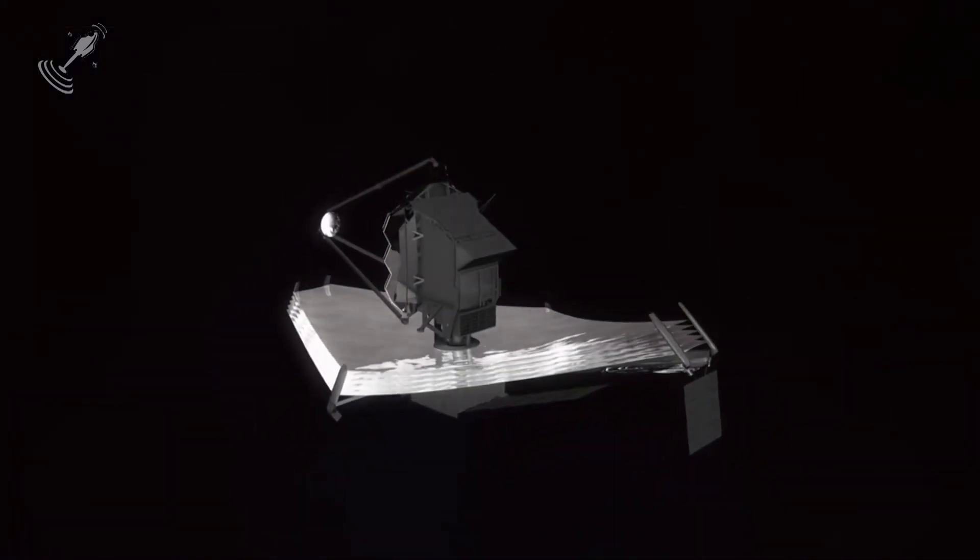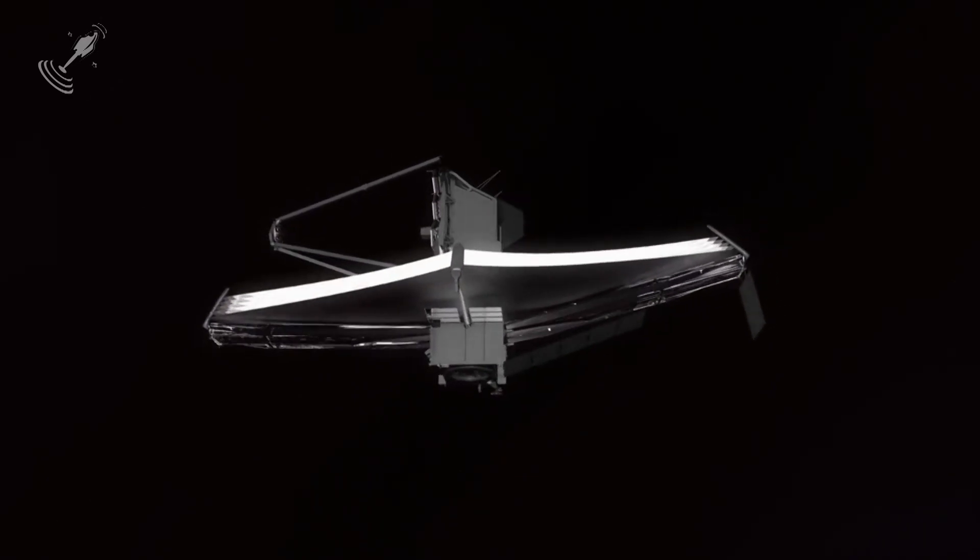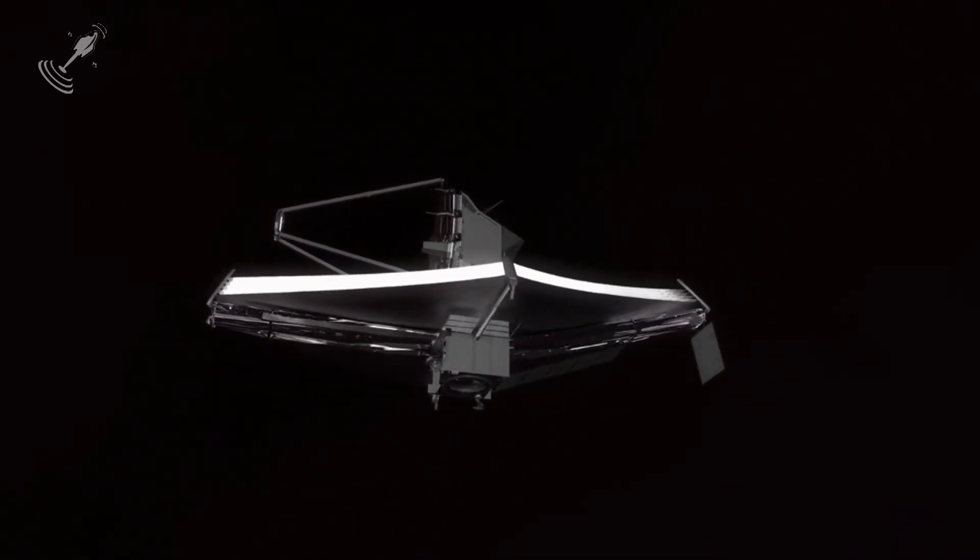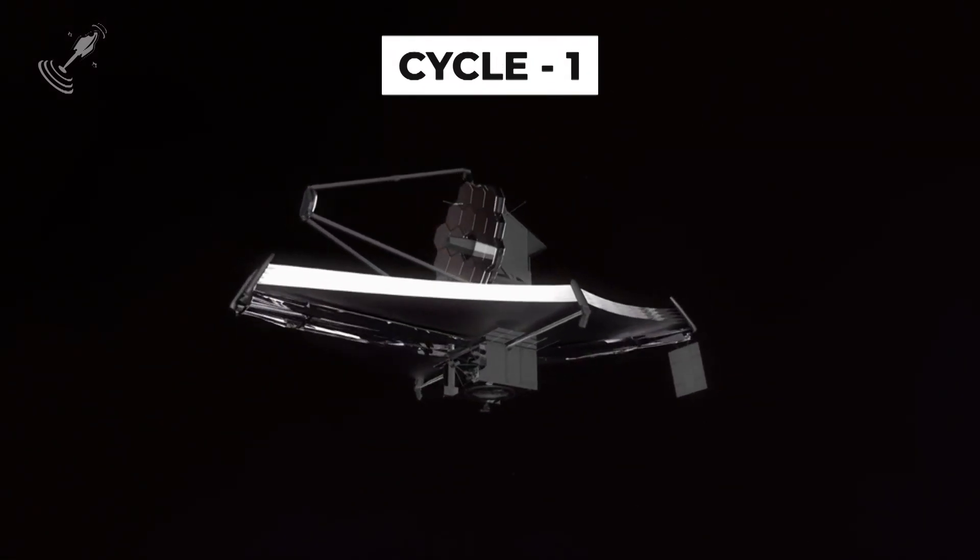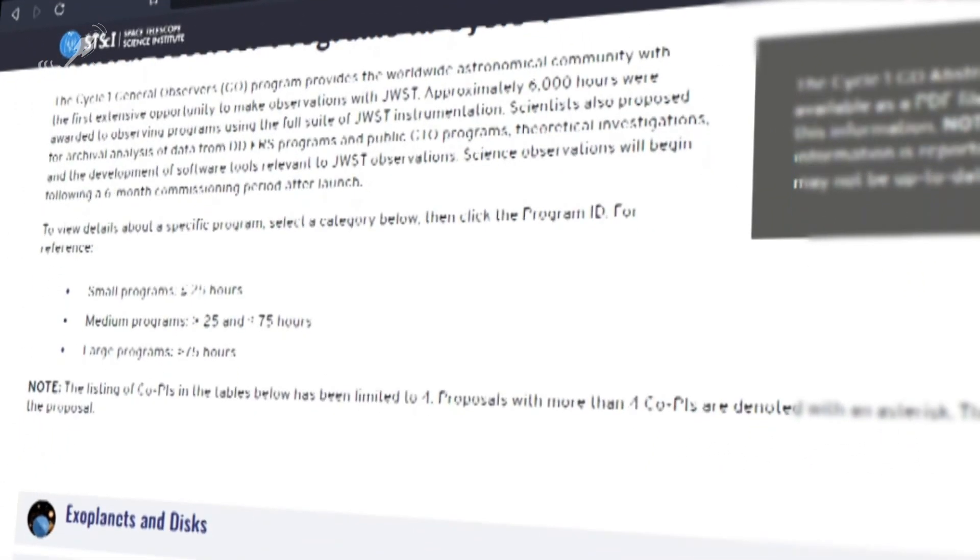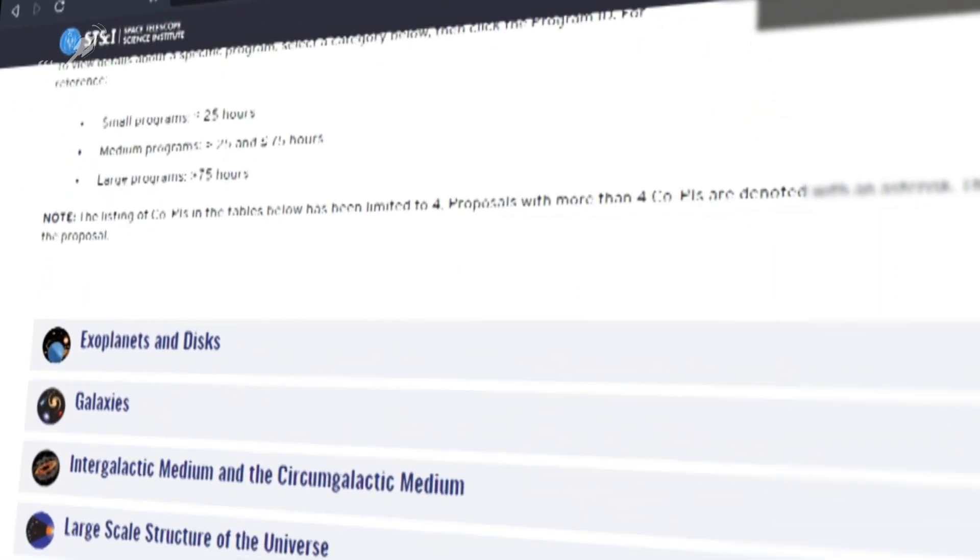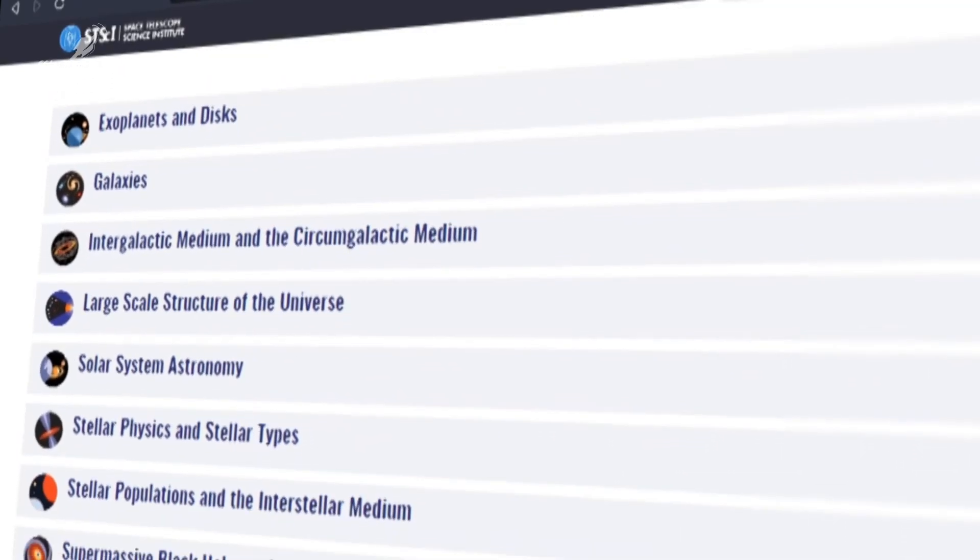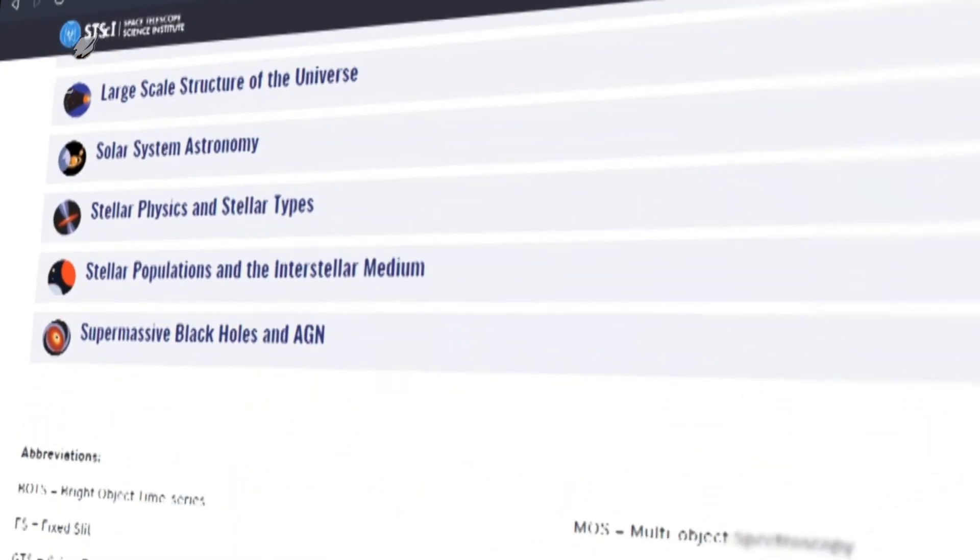While we are waiting for the big announcement, we do know that James Webb will concentrate on during its first year of operation known as Cycle 1. The list of planned research work has already been published by NASA, following a competition among scientists to choose the highest priority study. A procedure that will be repeated each year of the observatory's lifespan.